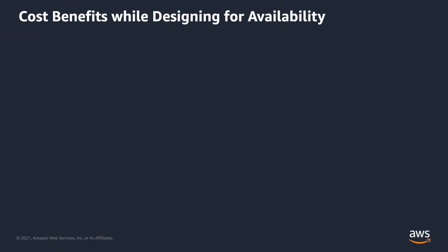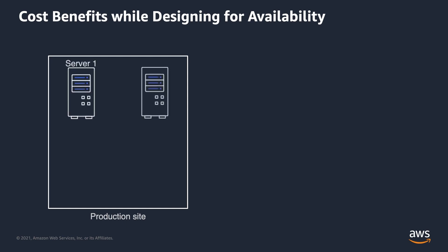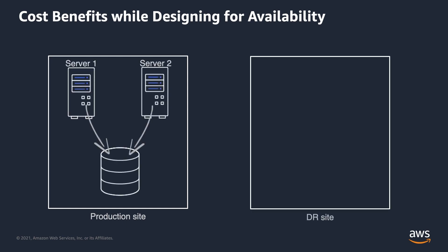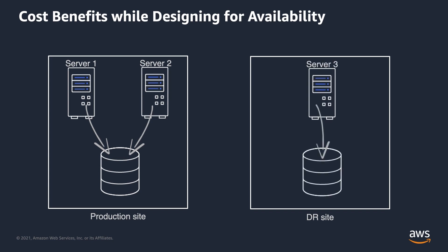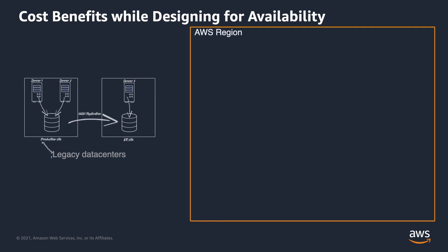Thirdly, let's talk about the cost of designing for availability. Let's say you have two database servers for high availability and you need a third server in the disaster recovery site located at a distance from your primary production site for added protection. In the on-premises world, this means the added cost of building and maintaining two distinct data center facilities — the cost of networking, virtualization, replication, power, and everything else that goes into it. How would you achieve the same capability on AWS?